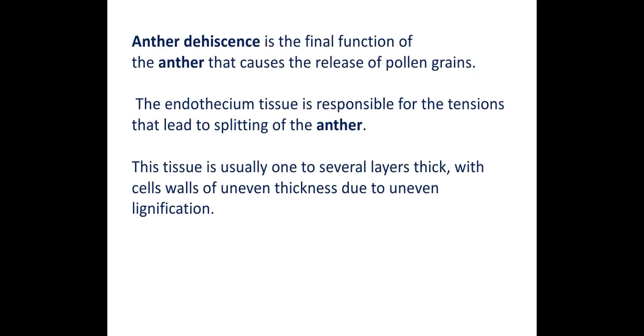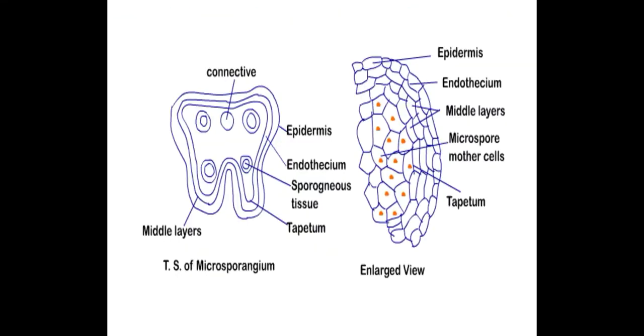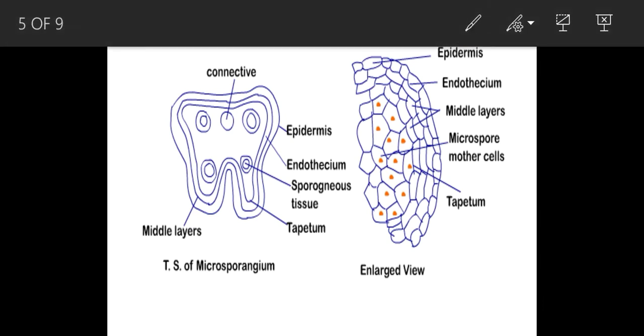In the previous lecture series, I explained the four types of layers present in microsporangium. The very first layer was the epidermis, with a protective function. Inner to the epidermis was the endothecium, which contains callous thickening, so it is also called the fibrous layer. Inner to the endothecium was the middle layer, which is two to three cells thick.